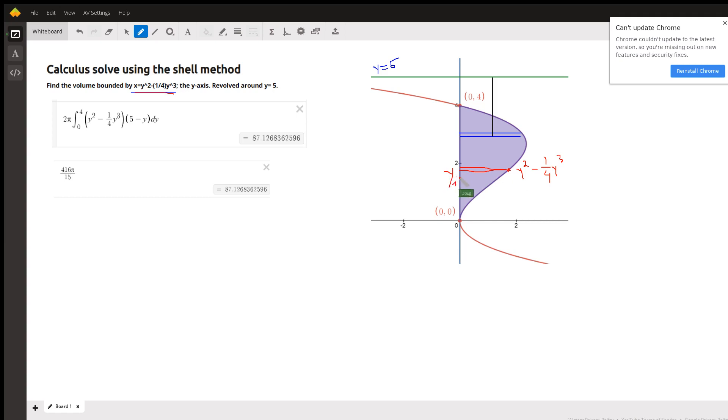Okay, so you do something to y to get this horizontal distance, an x coordinate. So that's what this is right here, the height of the shell.